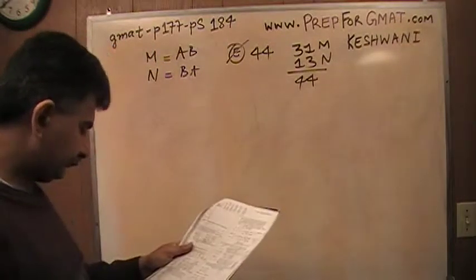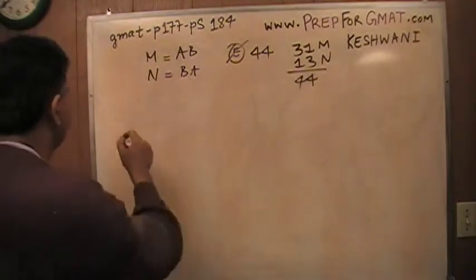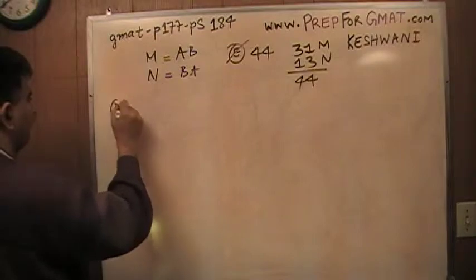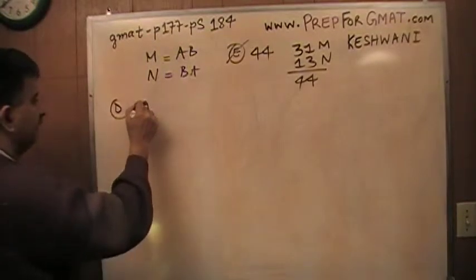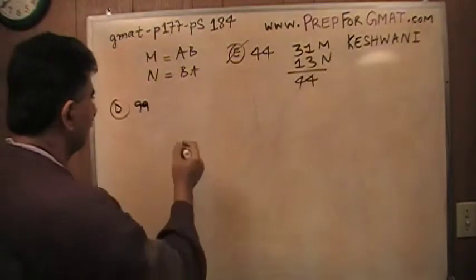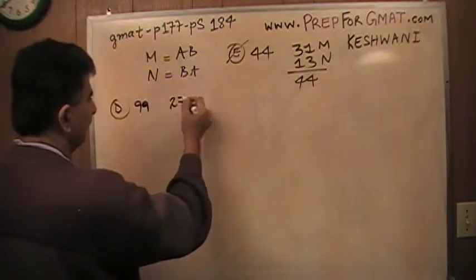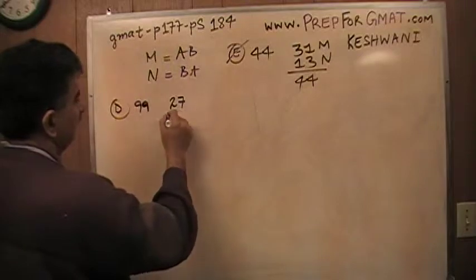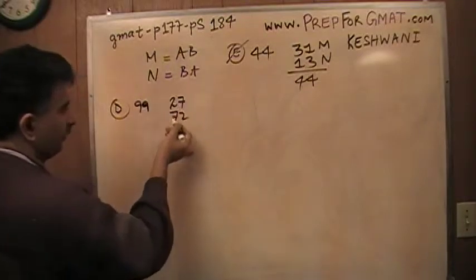Let's move on to D. D says 99. Could 99 be the sum of the sum of the digits? Let's start systematically. I'm going to start with the 2 and 7. Let's see, 2, 7, 7, 2. They add up to 9 very easily.